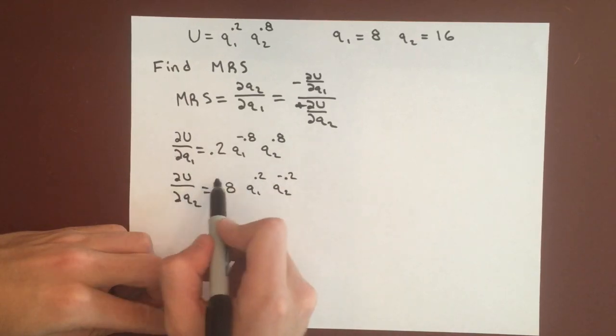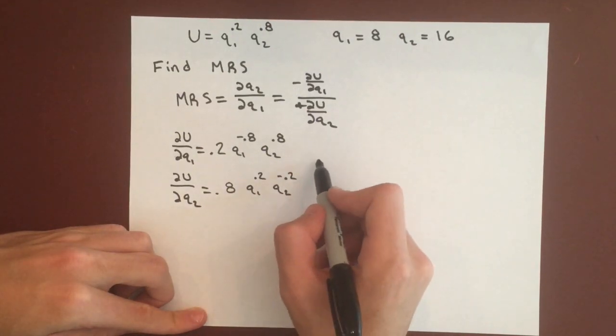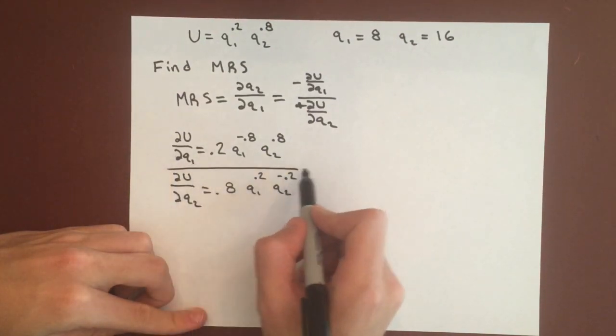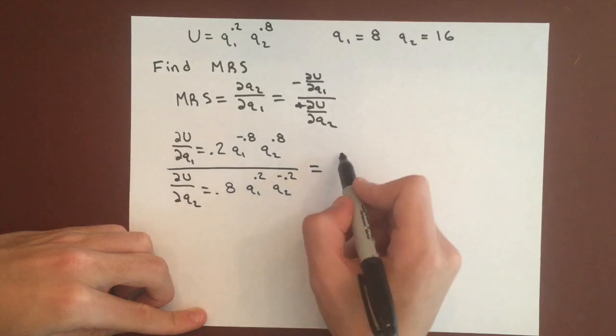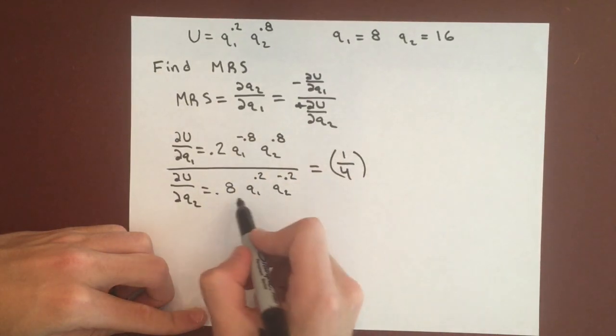And then we can divide these and multiply by negative 1 to get the marginal rate of substitution. So we can divide these values, and that'll give us 1 over 4 with the 0.2 and the 0.8.